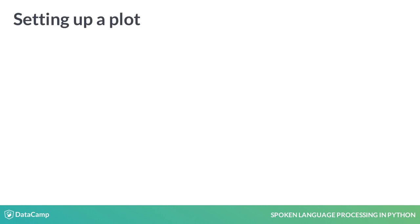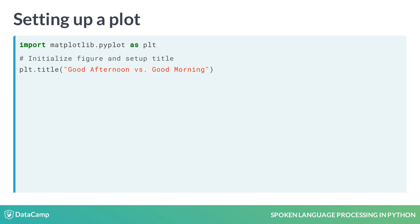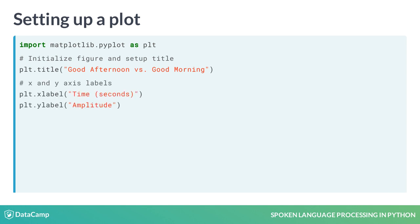To set up a plot, we first import the matplotlib pyplot module under the common alias plt. We can then start creating a plot by calling title on plt and passing it a string. The string will be the title of our plot. Then we can add some labels for the x and y axes using the x label and y label methods.